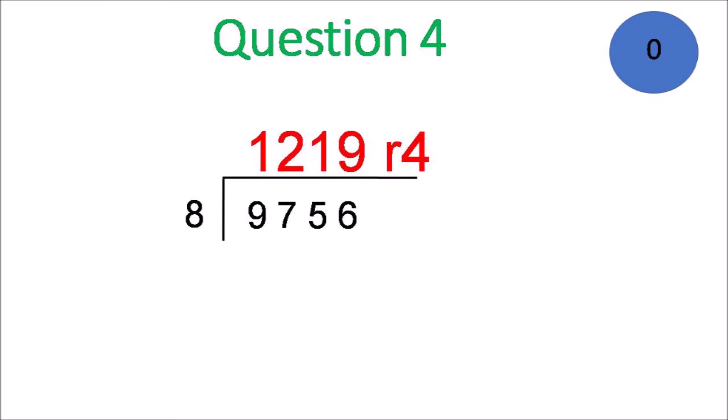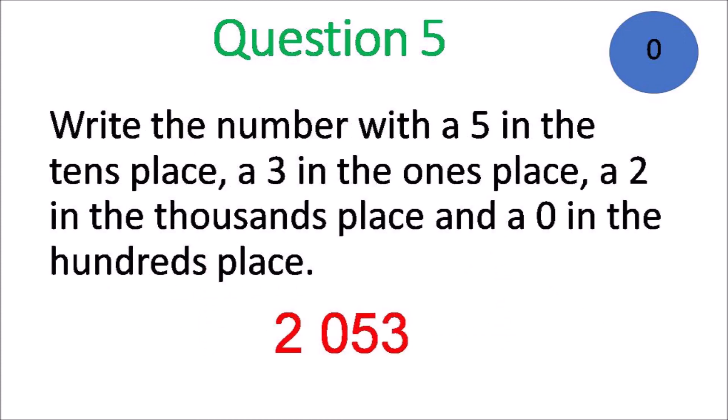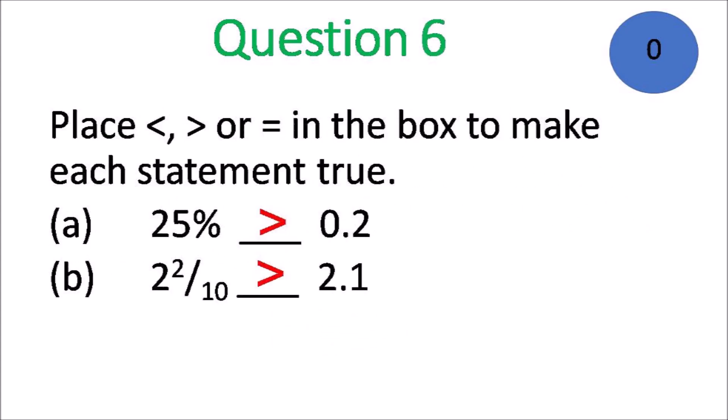Question 5: the rectangle has two lines of symmetry and the isosceles triangle has one. Question 5 (place value): that number would be 2,053. Question 6: you point to the smaller amount — it would be greater than for each of those.